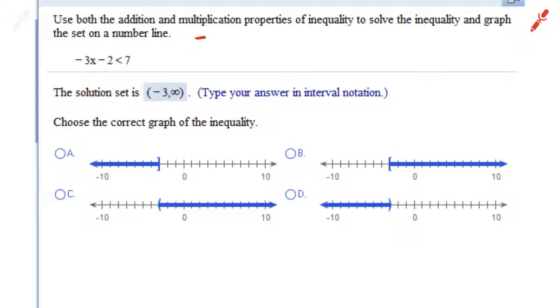We're going to have negative 3x is less than 7 plus 2, so negative 3x is less than 9. And when you divide both sides by negative 3, negative 3x divided by negative 3, we have to turn the sign around.